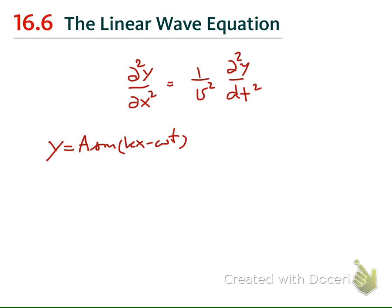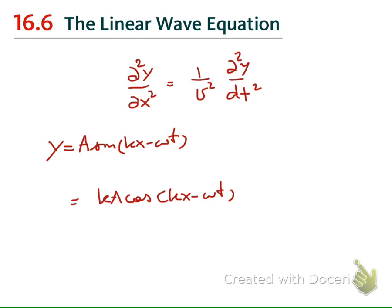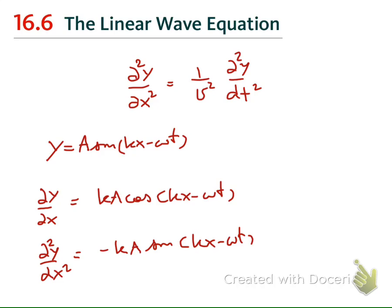This can be plus also, but I choose to work with the minus sign here. dy/dx is equal to kA cos(kx - ωt). And d²y/dx² is equal to minus k²A sin(kx - ωt).